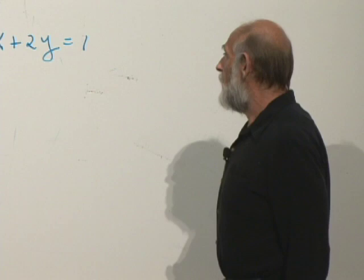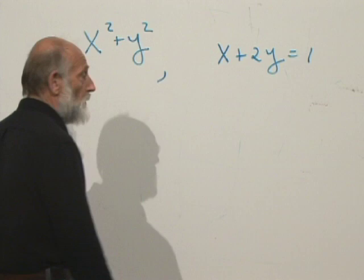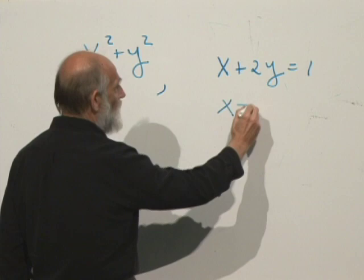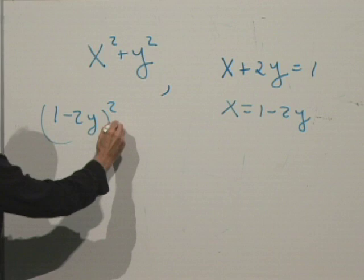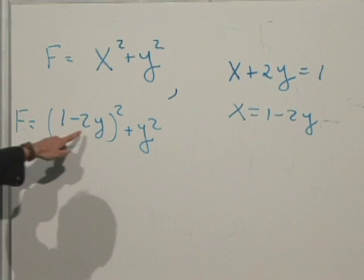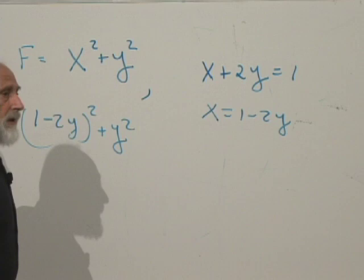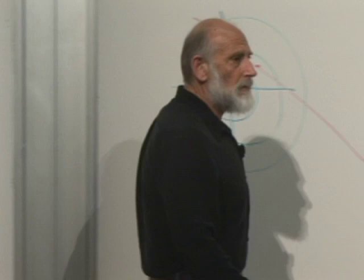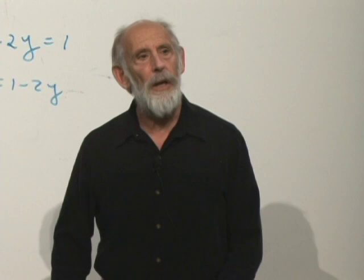How do you do that? One way is to eliminate one variable — solve for x, find that x equals one minus 2y, plug it into x squared plus y squared, giving (1−2y)² plus y², and then minimize with respect to y. We don't have to worry about the constraint anymore because we've already taken it into account. That's one way of doing the problem. But in many cases the constraint is too complicated to solve, so there is another way: the method of Lagrange multipliers.